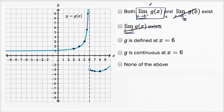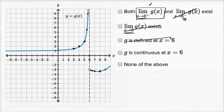Next, is g defined at x equals six? Looking at this graph, we have an open circle on the right-hand side, so g of six is not equal to negative three. And this goes up to infinity — we actually have a vertical asymptote drawn right at x equals six. So g is not defined at x equals six. I'll rule that one out.